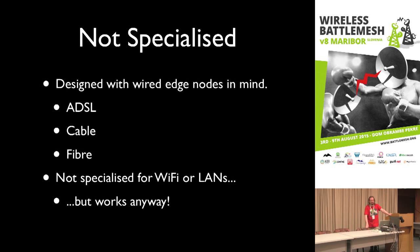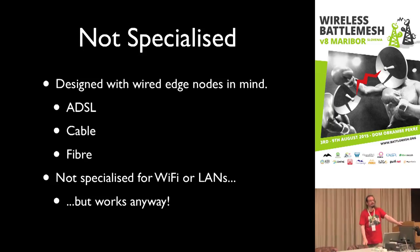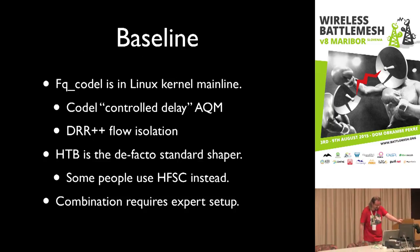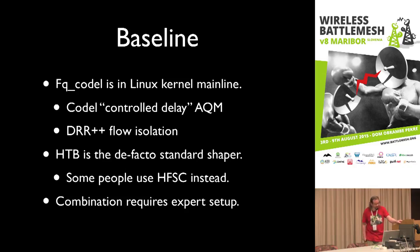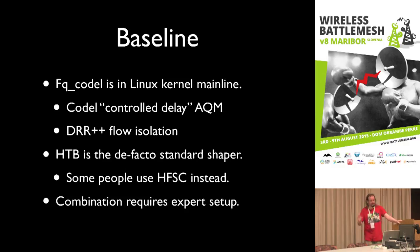Probably the only place it doesn't work optimally is in the data center, but none of us live in a data center. What we've got today is FQ-CoDel, which is in the Linux kernel mainline — it's in all of your OpenWRT installations, whether you've turned it on or not, and I think most of you have. That's basically a combination of CoDel (controlled delay active queue management) with flow isolation using a variant of deficit round robin, usually combined with the hierarchical token bucket, which has become the de facto standard shaper.